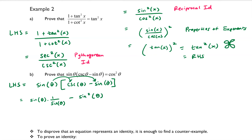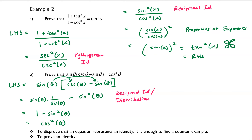We justified this step using the reciprocal identity, since I rewrote cosecant with the reciprocal identity, and also distribution, because I distributed sine of theta into both terms. So sine of theta times 1 over sine of theta equals 1, giving us 1 minus sine squared theta, which equals cosine squared theta by the Pythagorean identity.